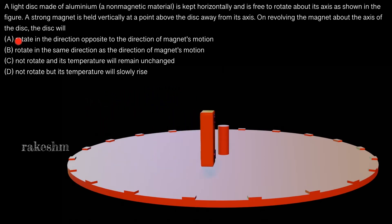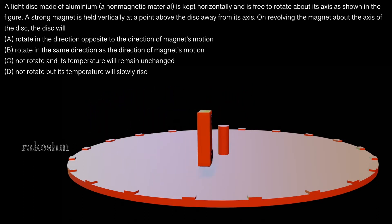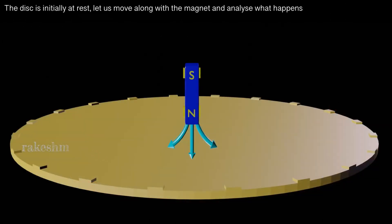Let us analyze what would happen and choose the correct option. The aluminium disc is initially at rest. We will move along with the magnet to analyze what happens. It might seem that the disc is rotating, but actually as we are moving with the magnet, the disc only seems to be rotating. Moving with the magnet makes it easier to visualize what is happening.